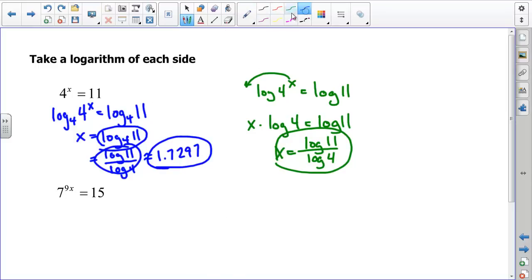Now, here with 7 to the 9x equals 15, again, if I wanted to, I could take the log base 7 of 7 to the 9x and the log base 7 of 15. This left side becomes 9x. The right side is still log base 7 of 15. If I divide by 9, I get x equals log base 7 of 15 divided by 9. That's my exact value, and then I plug it into my calculator and I get 0.1546.